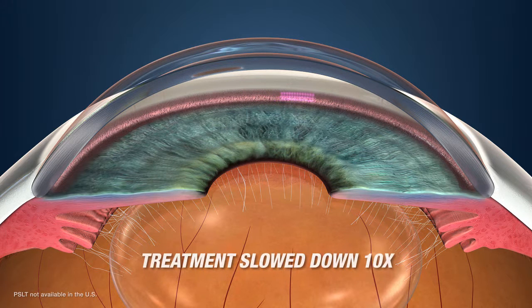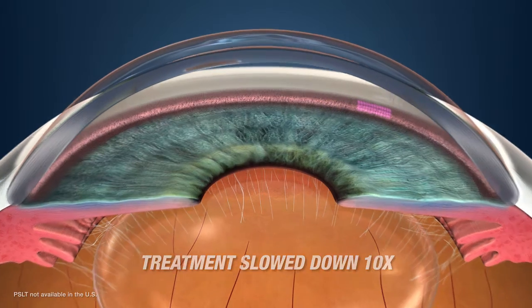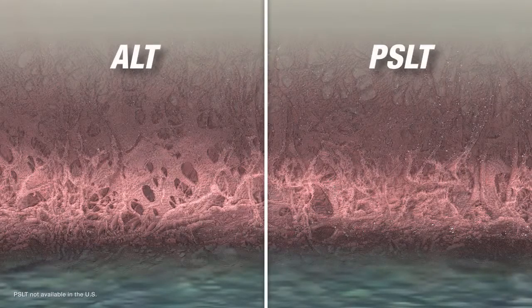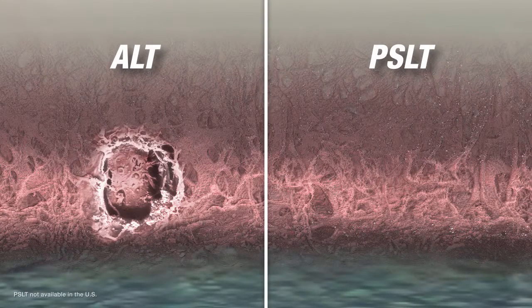Automated rotation of consecutive patterns ensures that treatment steps are precisely placed without overlap or excessive gaps. Available only on the Pascal laser, PSLT can effectively reduce intraocular pressure without the scarring and burns associated with ALT.